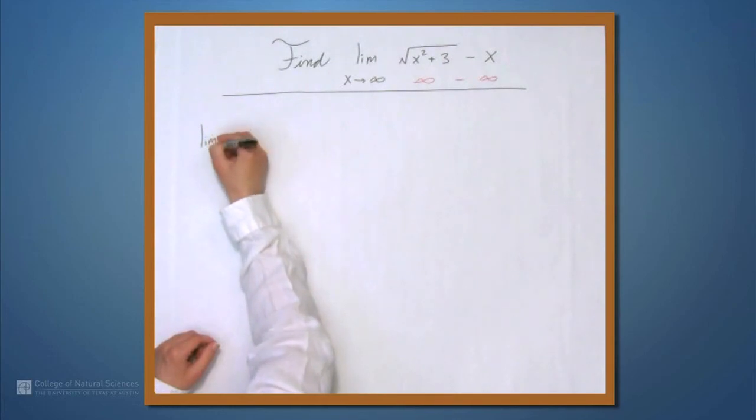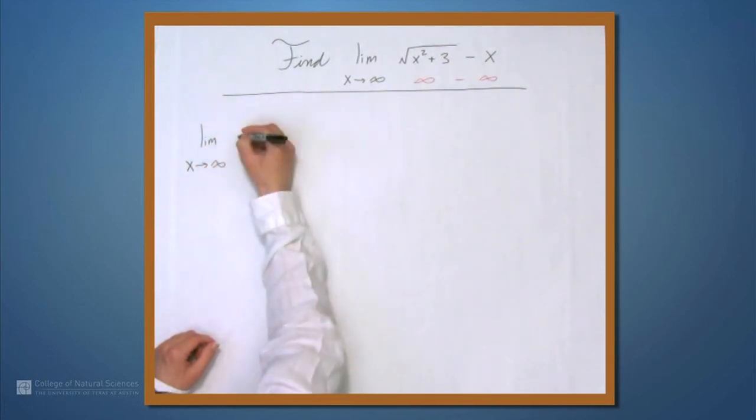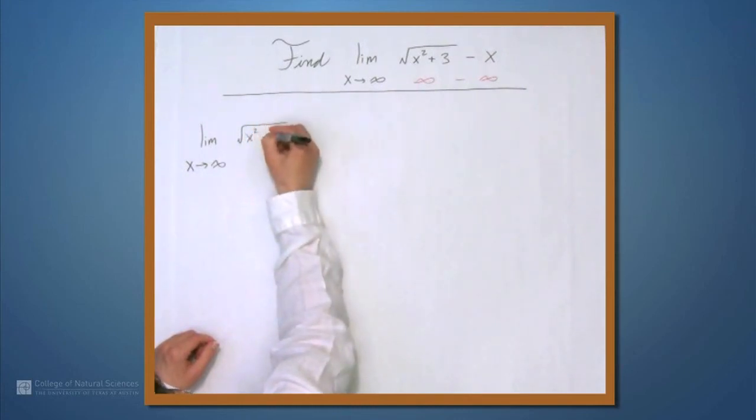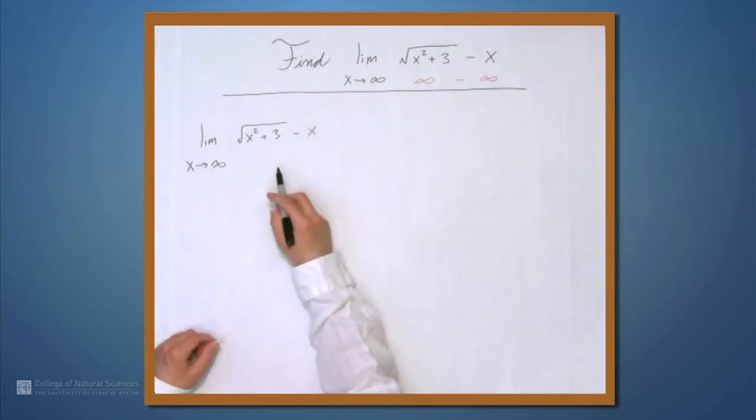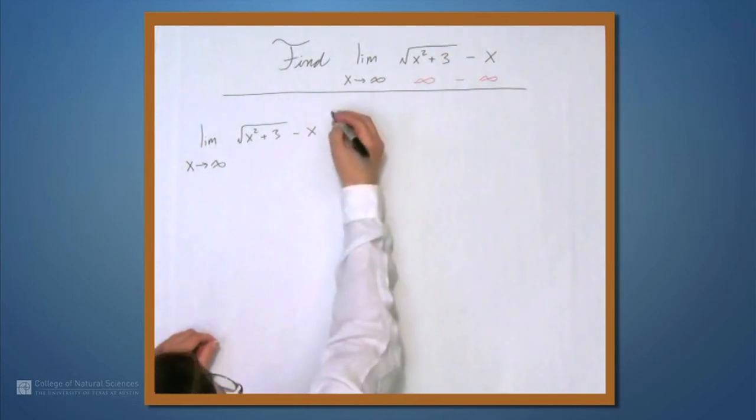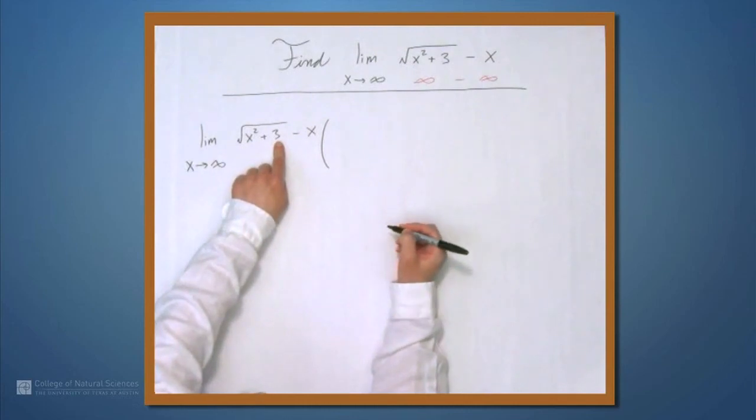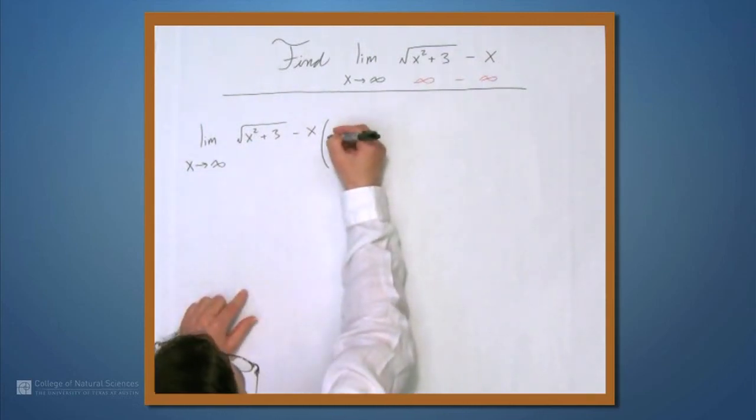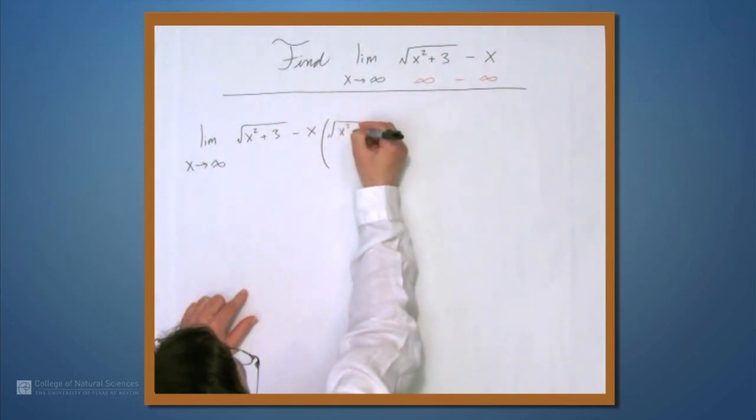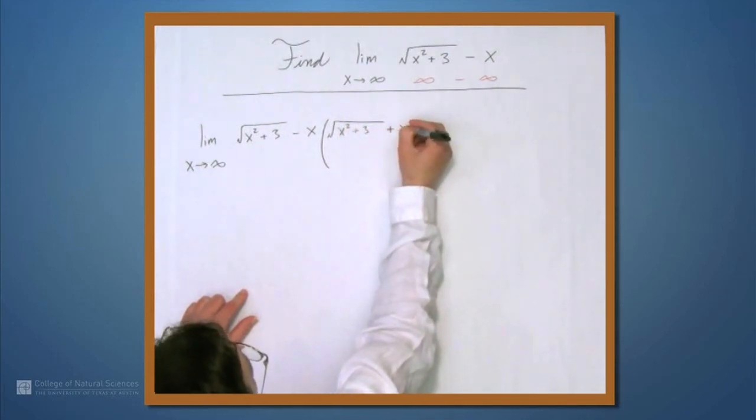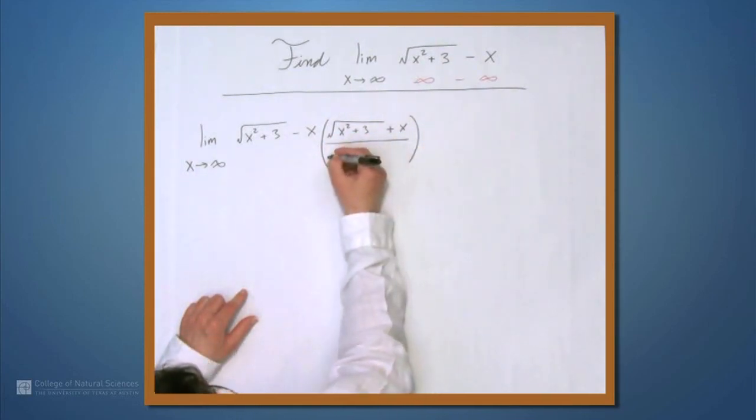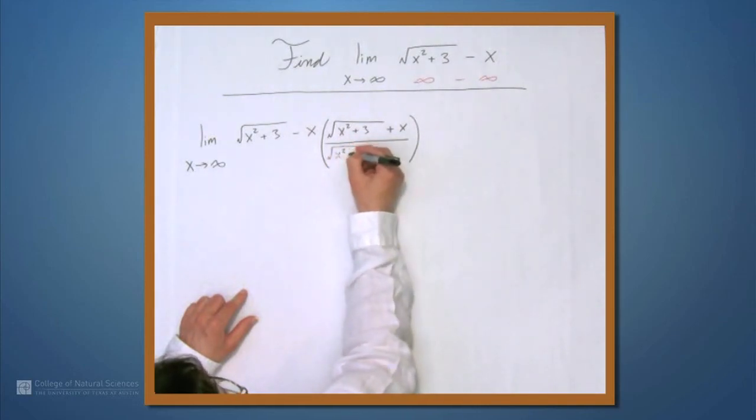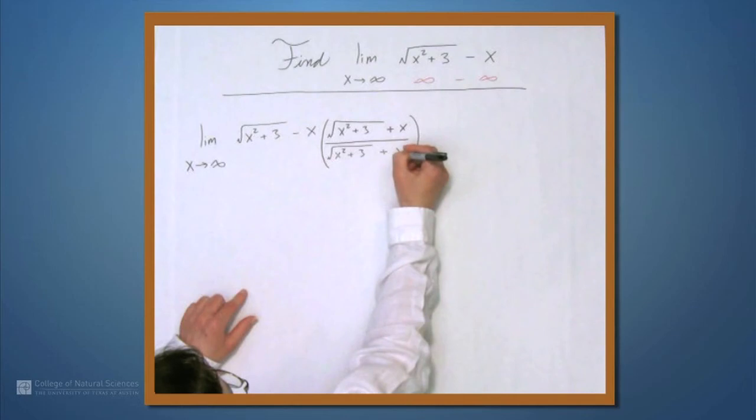We have the limit as x goes to infinity of the square root of x squared plus 3 minus x. If I want to turn this into a ratio, I can multiply by its conjugate, and the conjugate means this term plus this term, so the square root of x squared plus 3 plus x. But if I don't want to change what this equals, I need to put in the denominator the same thing: the square root of x squared plus 3 plus x.